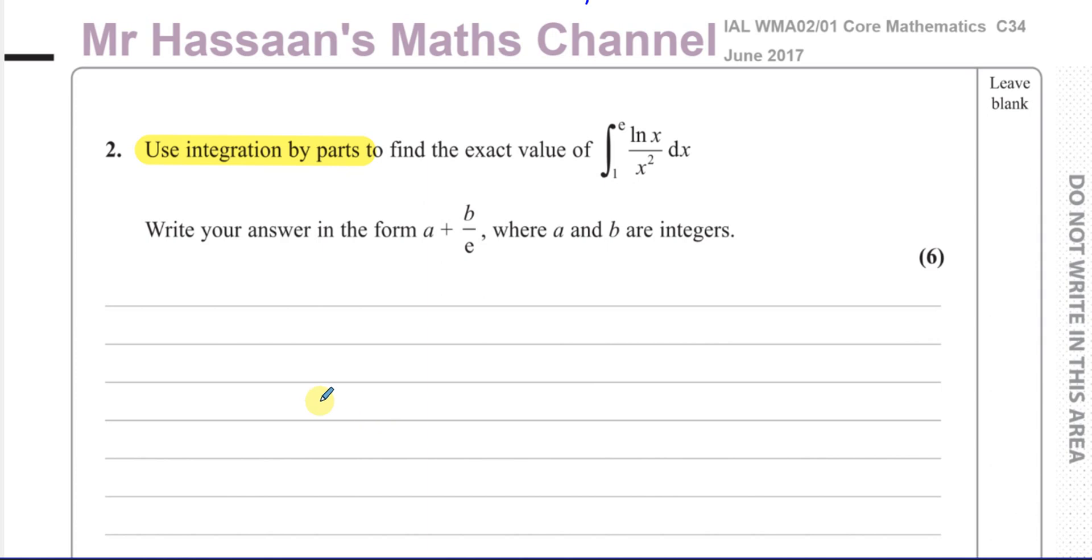For integration by parts, you have to have a product of two separate functions. This is a quotient of two separate functions, which can be expressed as a product by writing this as 1 over x squared times ln(x), which is x to the power of minus 2 times ln(x). That's now a product of two separate functions.